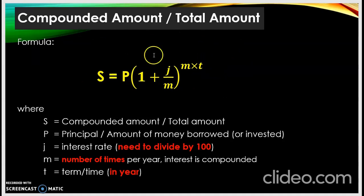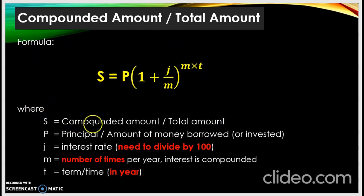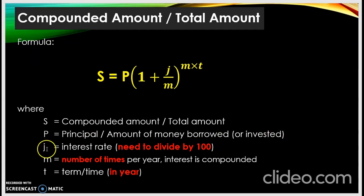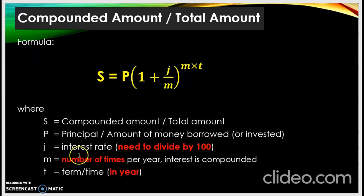Normally the formula is given in the question or given as a hint. Where S is the compounded amount or total amount, P is the principal or amount of money borrowed or invested, j is the interest rate — we use j since r is not given — and j must be divided by 100. M is the number of times per year interest is compounded.